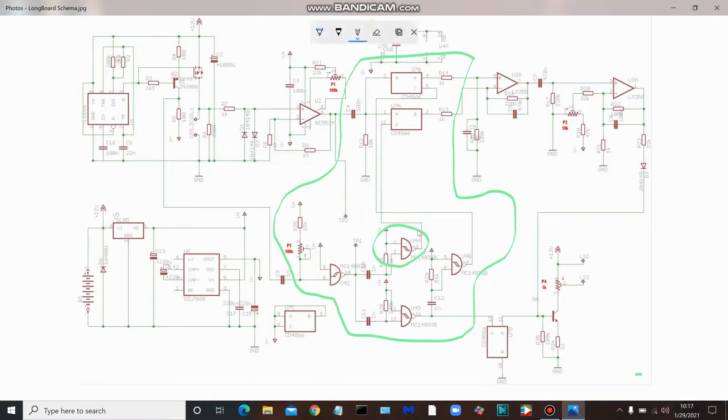U4A right here is responsible for the main sample pulse, and U4A is one of the parts of the 4093 chip. All the parts in the schematic are broken out, so U4A is the main sample pulse.